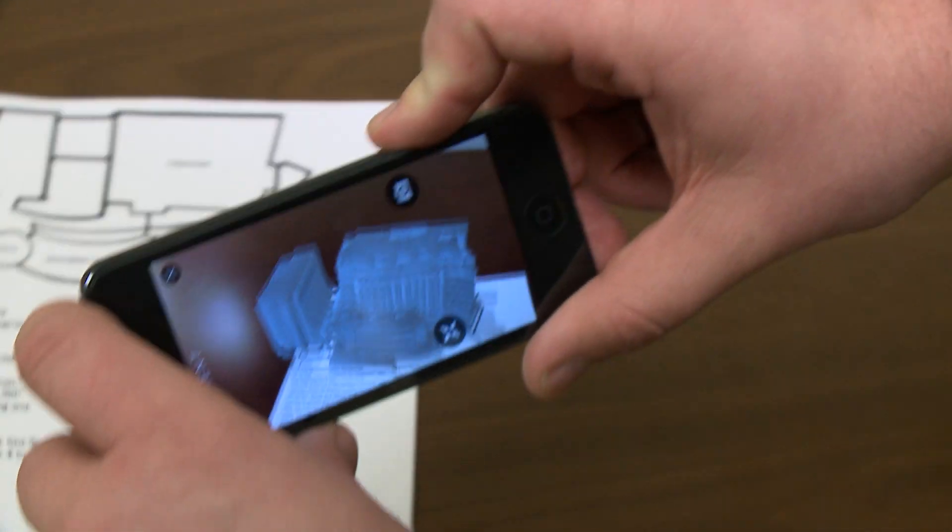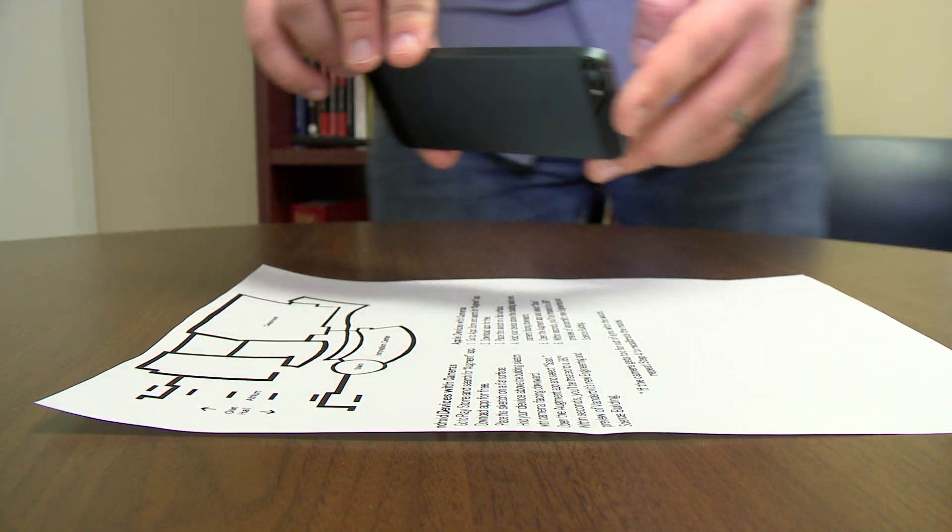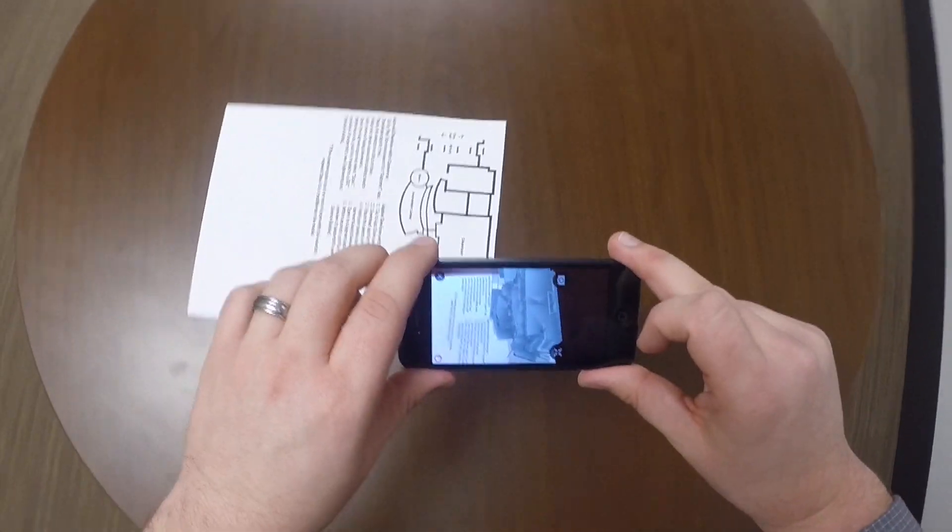Now what you want to do is move your phone all the way around it and you'll get a really cool 360-degree view of the whole building.